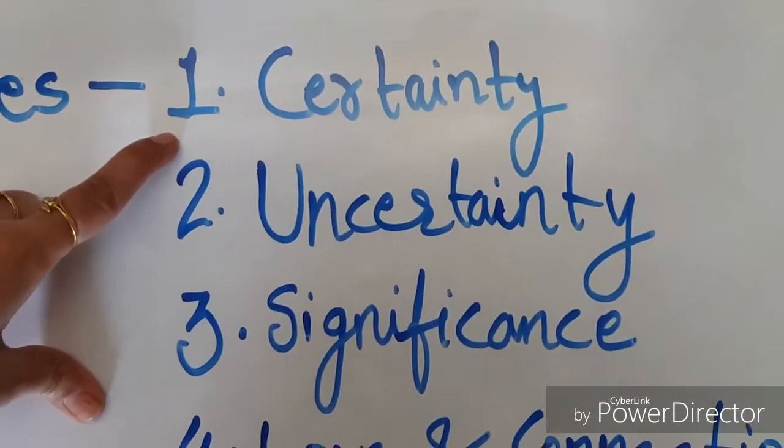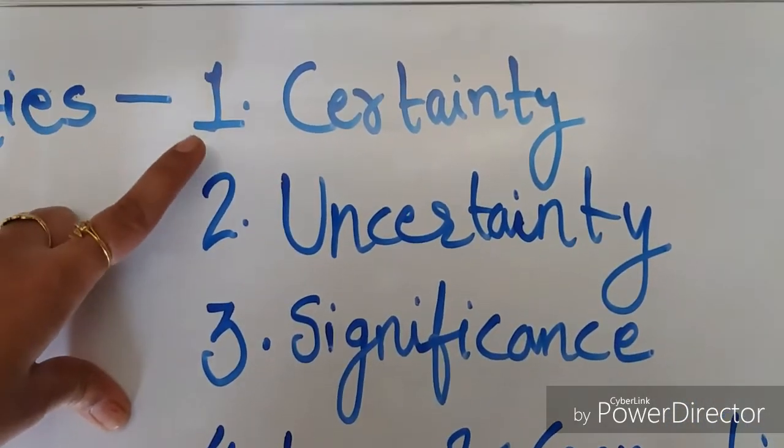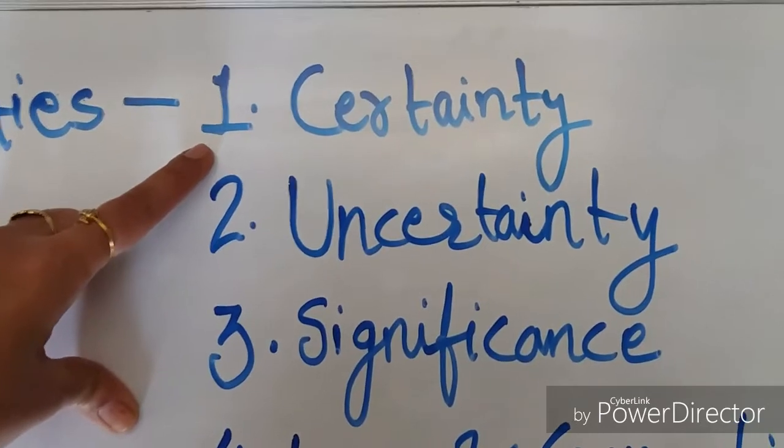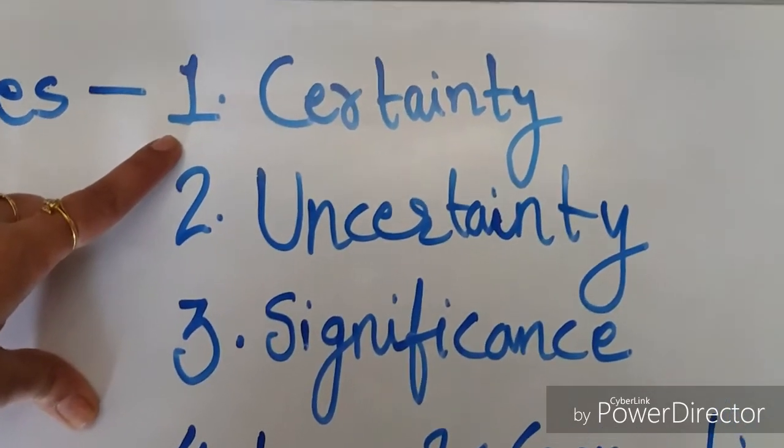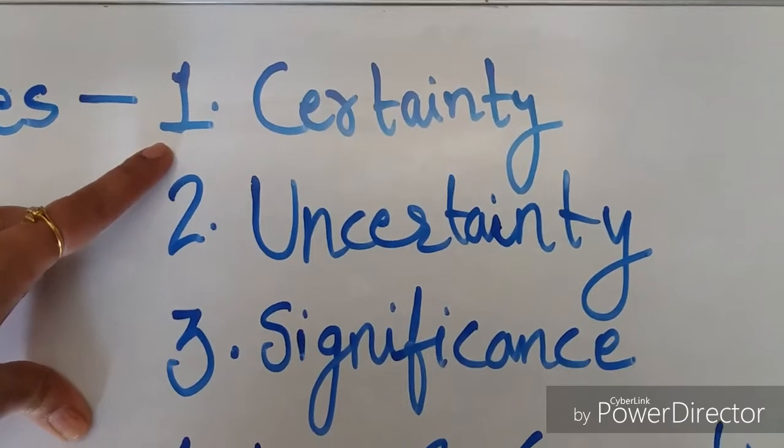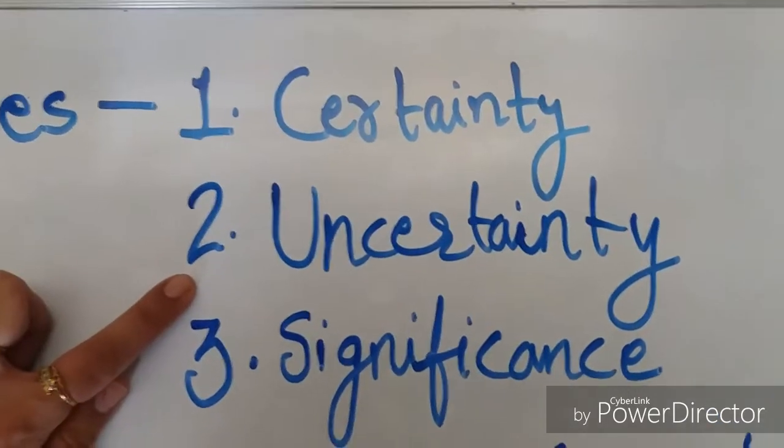The first priority is certainty. Some people want certainty in their life. What is going to happen next, they need to know it right now. For example, they want a fixed income generated every month or every year.